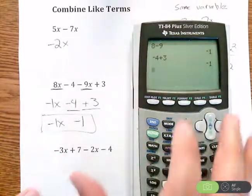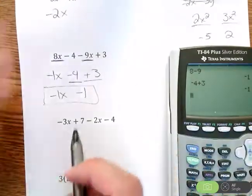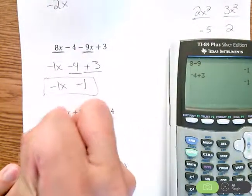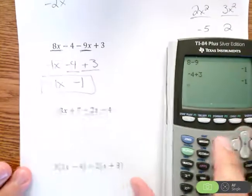And then I look at these final two terms - this has an x, that doesn't, so they cannot be combined. So that's as far as we can get. Another quick example of that - I have negative 3x plus 7 minus 2x minus 4.